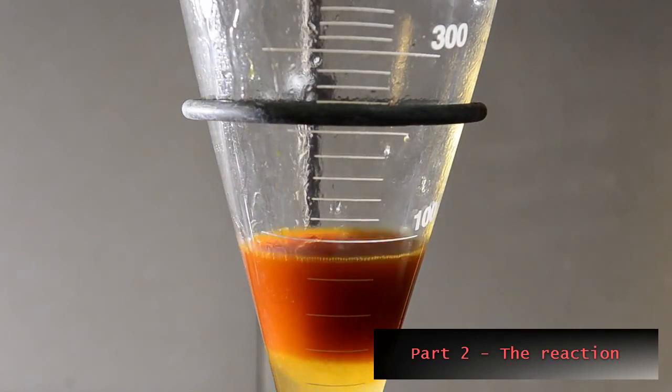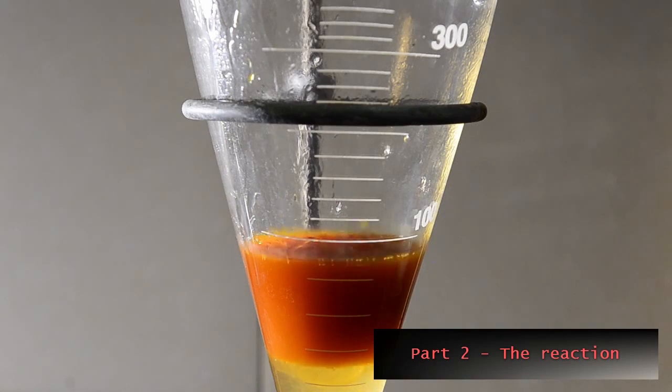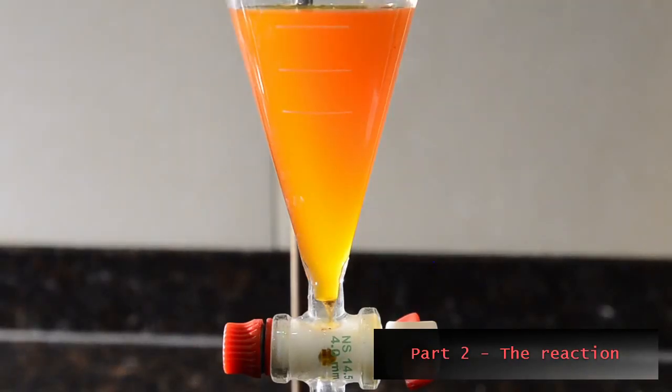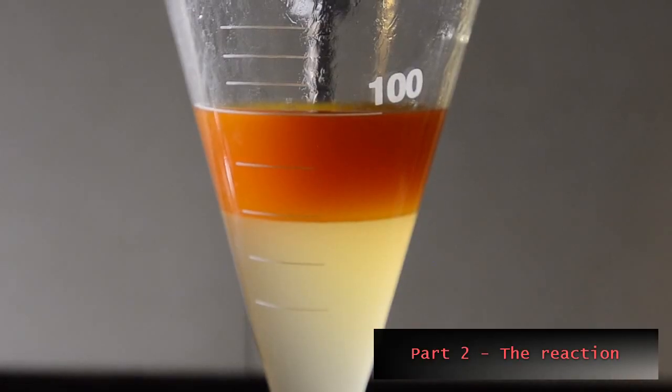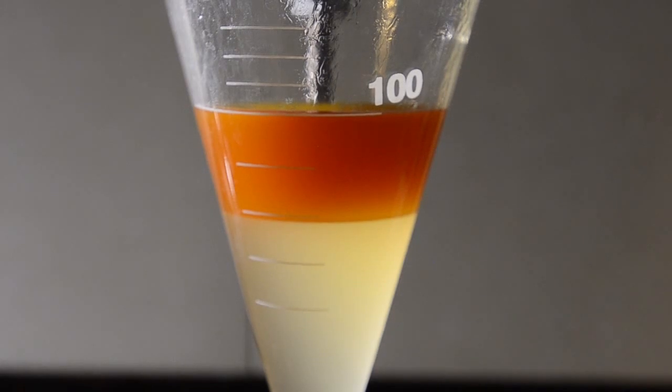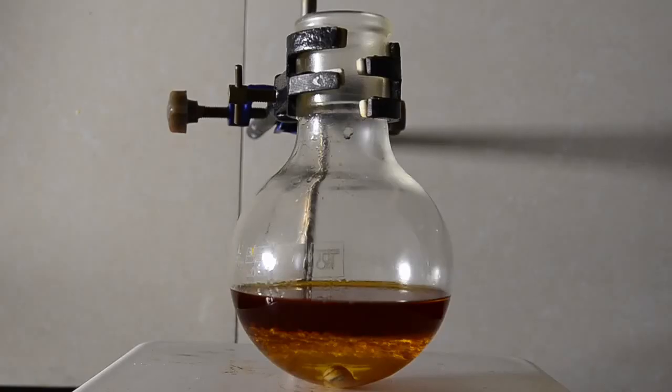Combine the product and toluene layers in the funnel and wash with 10 milliliters of saturated sodium bisulfite solution. This will remove any unreacted benzaldehyde. Finally, wash the product and toluene mixture with 50 milliliters of saturated sodium chloride solution. Reserve the orange top layer and place into a 250 milliliter round bottomed flask.